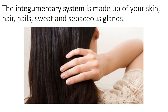Another function of the integumentary system is body temperature regulation. The capillaries in our skin can vasodilate or vasoconstrict. When we're hot and need to release heat, dermal capillaries will vasodilate — that's why you might appear flushed or pink or red on the surface. Conversely, dermal capillaries can vasoconstrict, meaning they narrow, which prevents heat loss. All of that leads to the maintenance of a normal homeostatic body temperature.